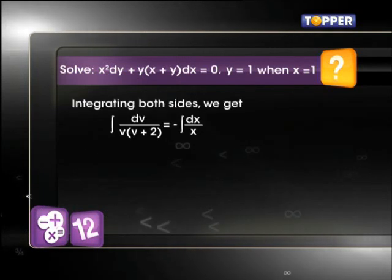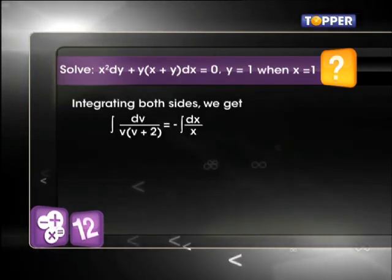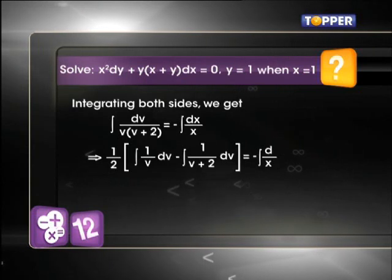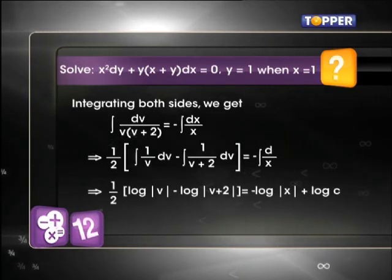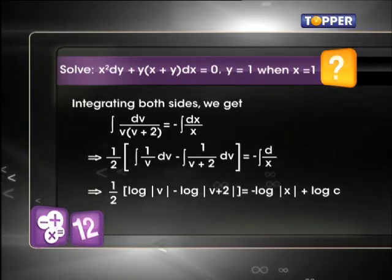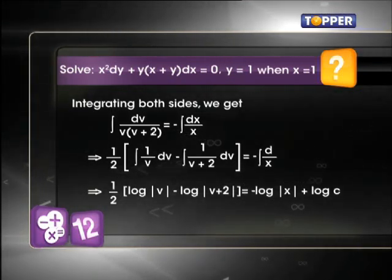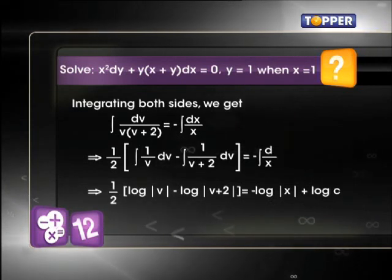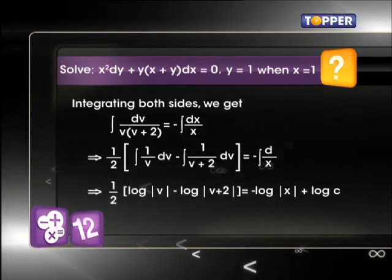Now, on integrating both sides we get (1/2)log|v| - log|v+2| = -log|x| + log c. Log c here is the constant of integration.